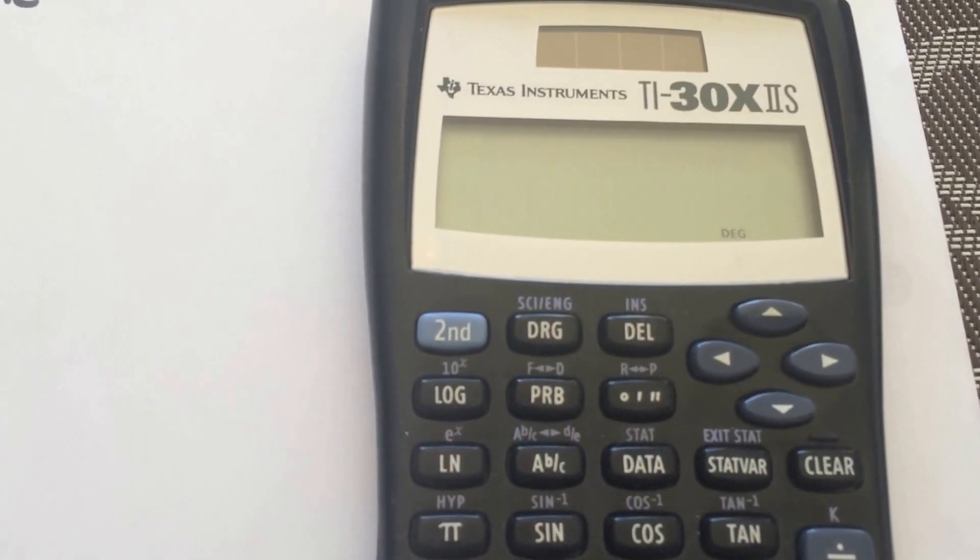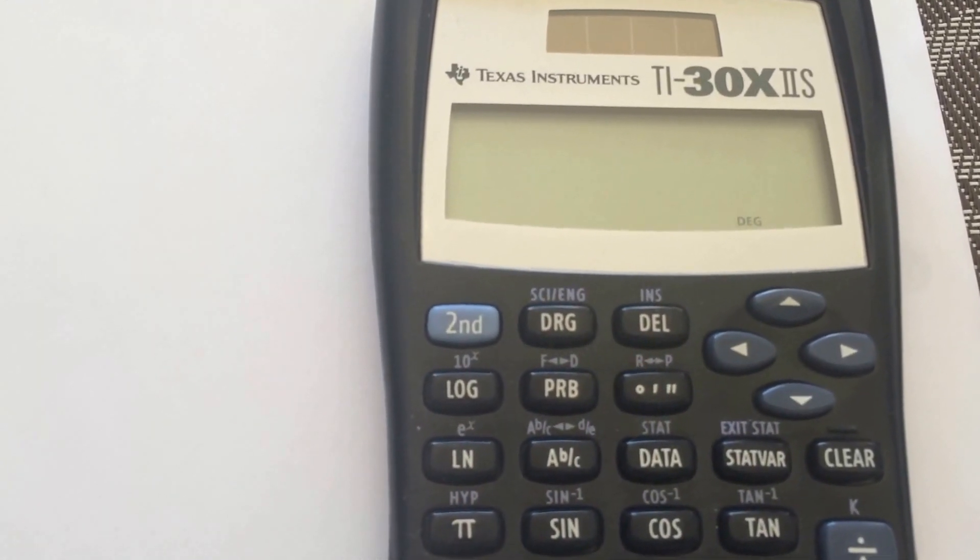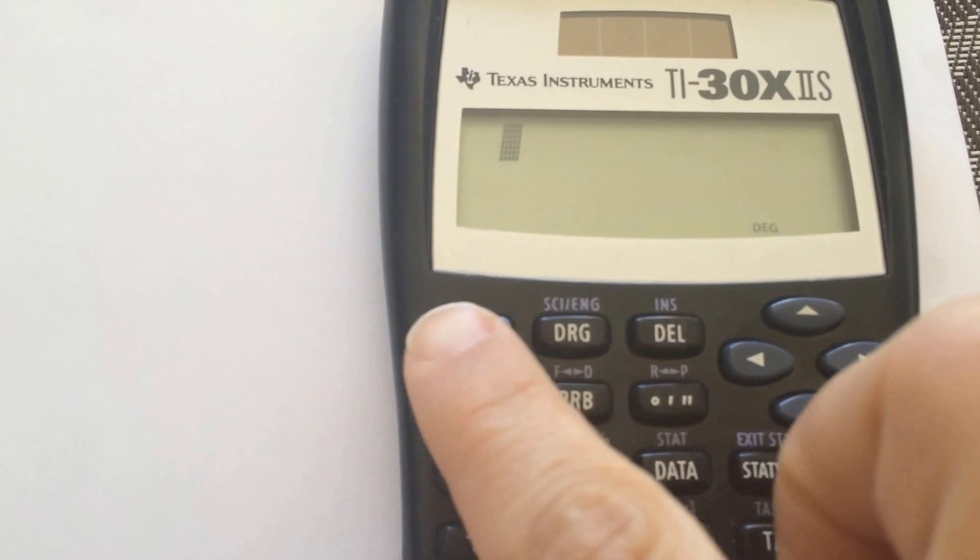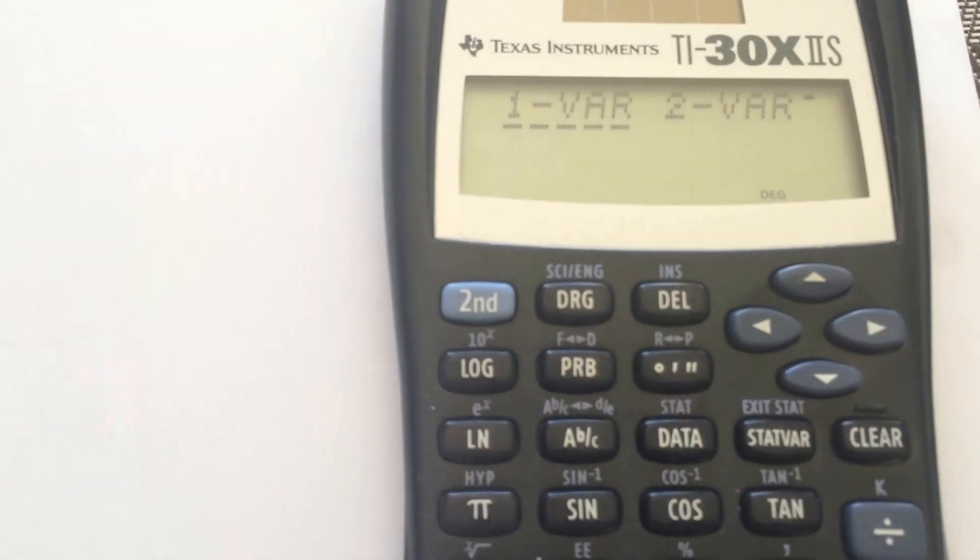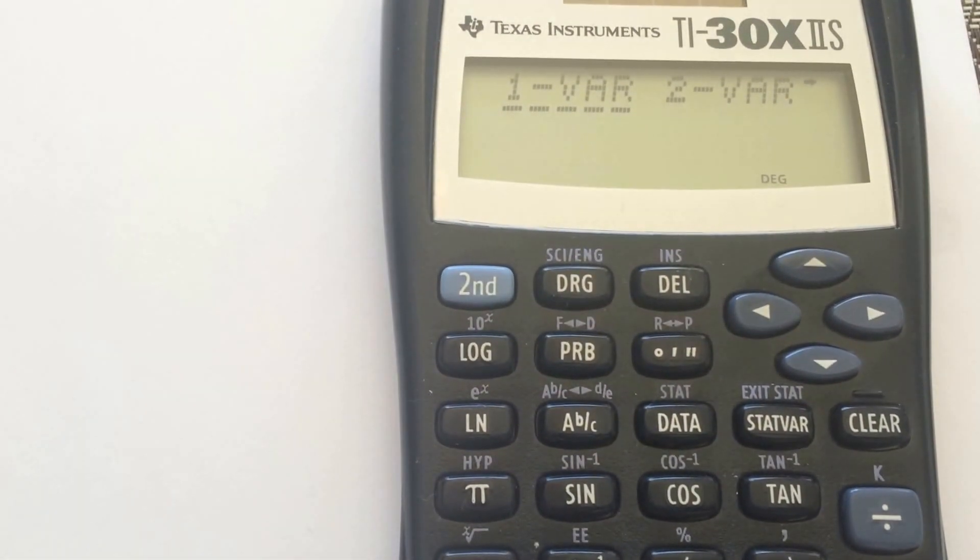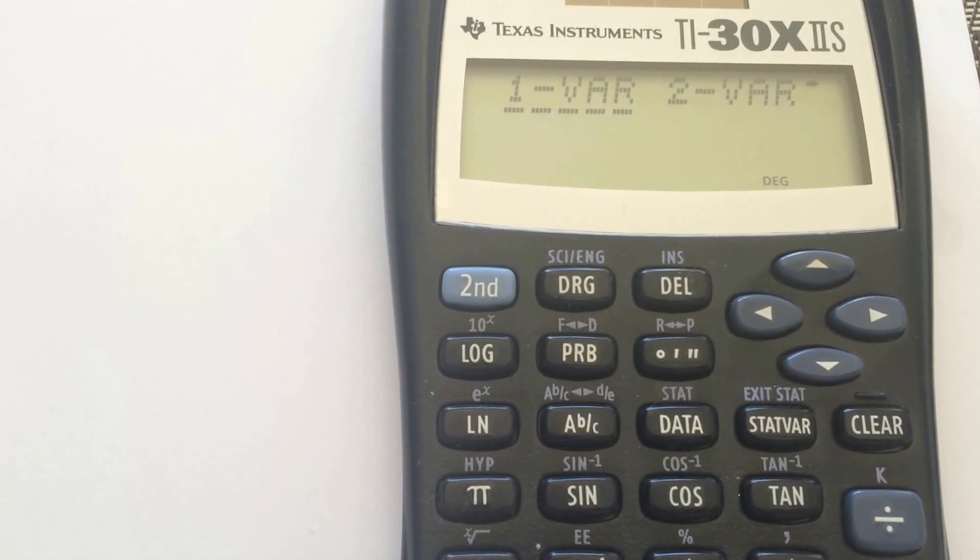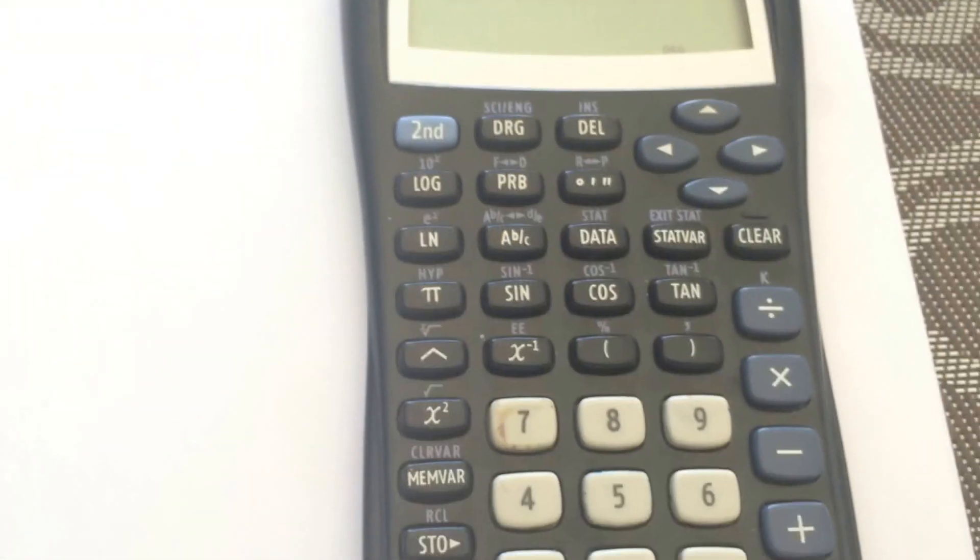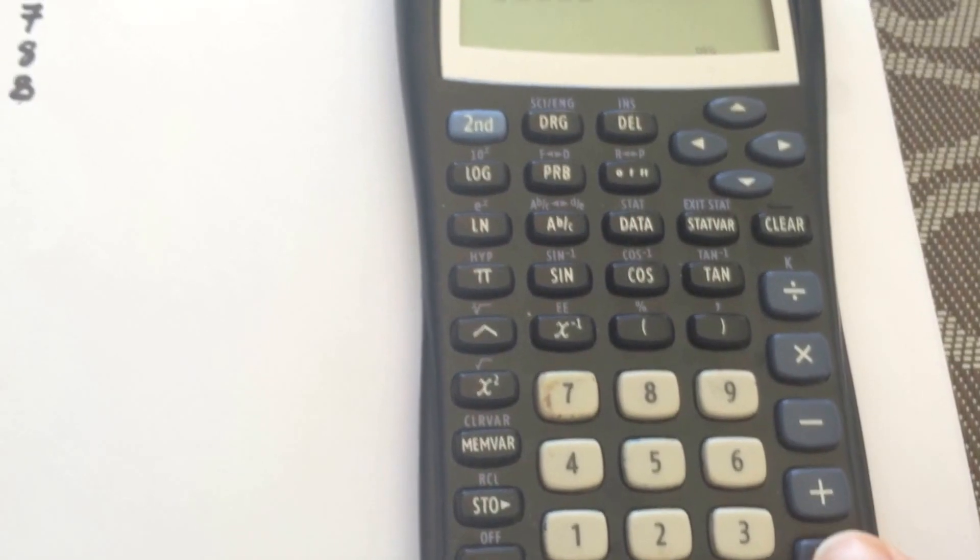So on your calculator, the first thing you want to do is go into statistics mode. You're going to select second function, and then stats. You're going to see it's one variable or two variable. In our case, the mean, standard deviation, all of that is one variable. So hit enter.